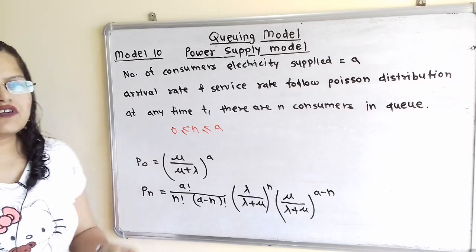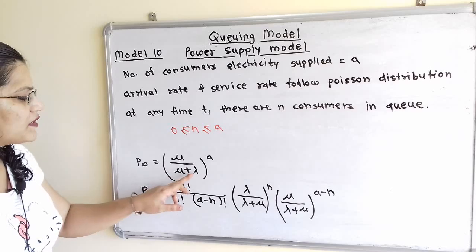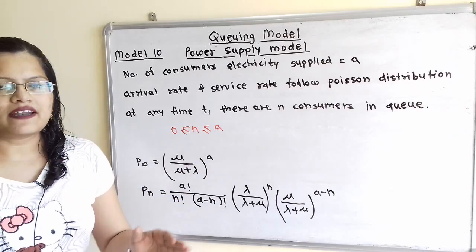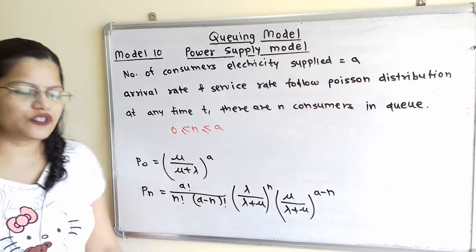First, we calculate the probability of an empty system, P0, which equals mu divided by mu plus lambda, raised to the power a.